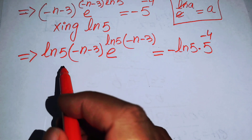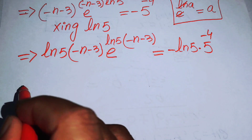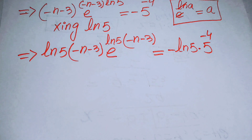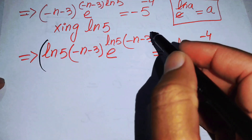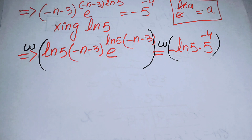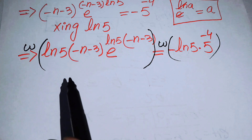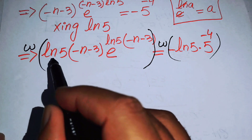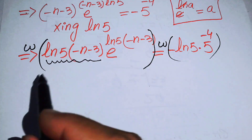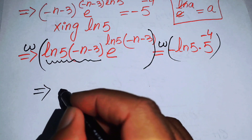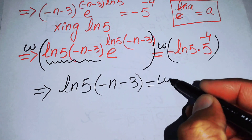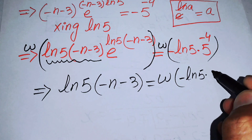Now we apply the Lambert W function to both sides. The left hand side is now in the form of x times e to the power of x, so according to the Lambert W definition its output is just the exponent of e, which is log 5 times minus n minus 3, equals W of minus log 5 times 5 to the power of minus 4.